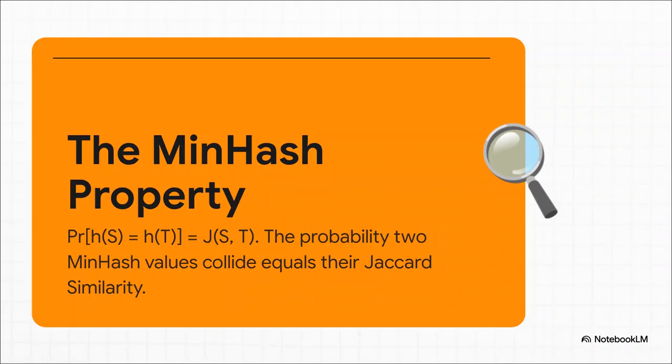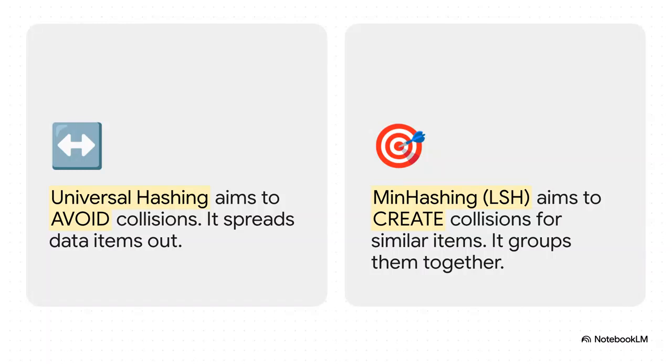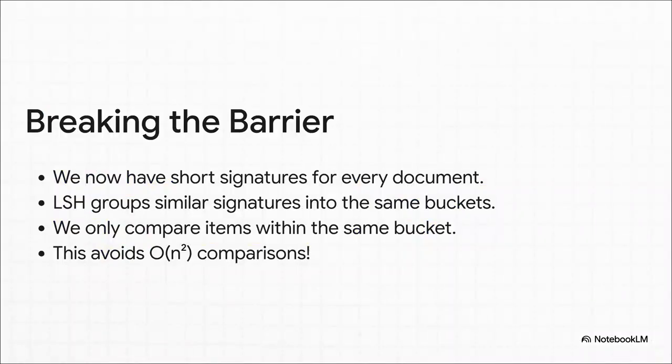Think about that. We've managed to shrink these gigantic sets of data down into these tiny little fingerprints, and yet they still perfectly preserve the similarity of the originals. It's just an incredibly clever and powerful approximation. This completely flips the normal goal of hashing on its head. Usually with hashing, you're trying your best to avoid collisions. You want different items to have different hashes. But here, with what we call locality-sensitive hashing, or LSH, we've designed a system that wants collisions. We are actively trying to make similar items collide, because for us a collision is a huge signal that we've probably found a match.